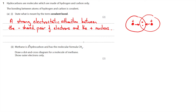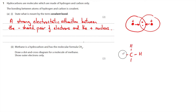The next part says methane is a hydrocarbon with a molecular formula of CH4 — draw a dot and cross diagram for a molecule of methane showing outer electrons only. Before drawing, it's good to think about it: carbon is in group four so it makes four covalent bonds and shares four electrons, whereas hydrogen only has one electron and therefore only needs to share one electron to make one covalent bond.